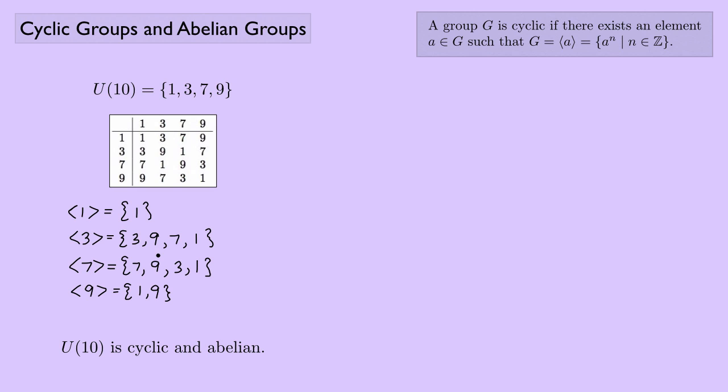That didn't help us too much. We were trying to find something that maybe was cyclic but not abelian or abelian but not cyclic. Let's try U(12). Same idea, group of units modulo 12 here. We have 1, 5, 7, and 11. Here's the group table. Once again, we see that it is abelian, we see that we have a nice symmetry across the diagonal. Let's try and figure out if this is cyclic.